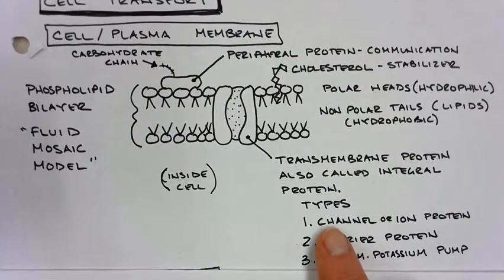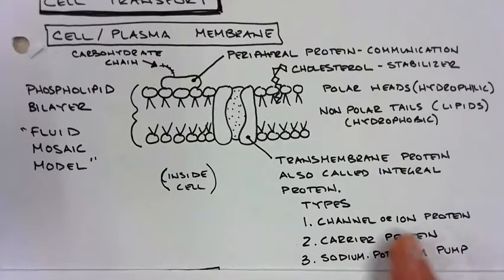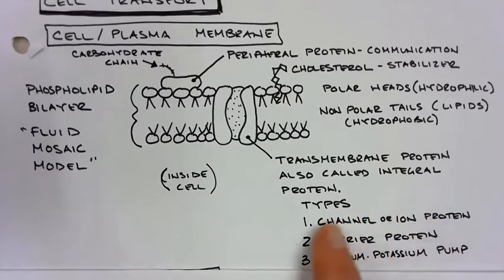There are lots of different types. There's some called channel or ion proteins, carrier proteins, and the sodium potassium pump. We will discuss these in more detail a little later.